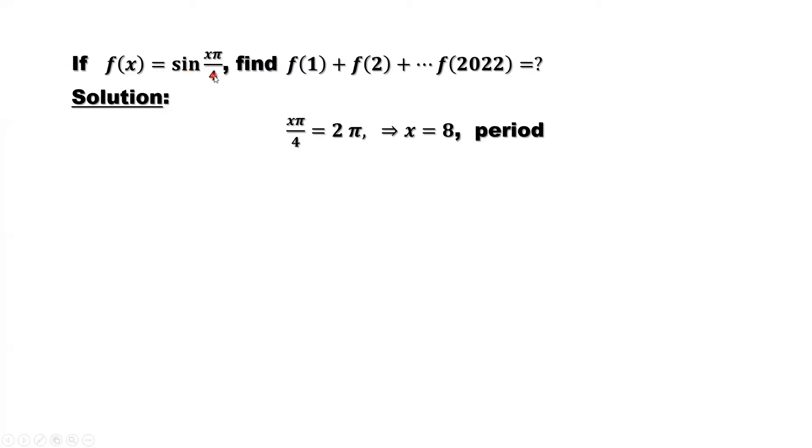We do know sine of x, the period, is 2 pi. 8 is the period of sine of x times pi over 4. What does this mean? Period. That means after 8, those function values are repeating.